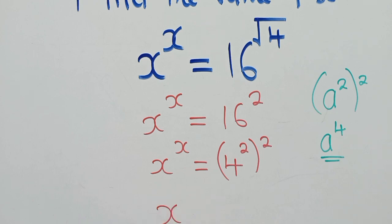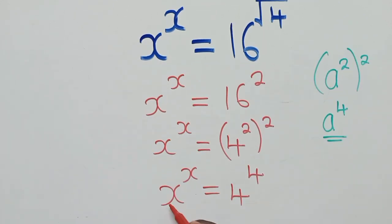We shall have x power x equal to 4 power 4. So if you can see here, this and this are equal to each other, this and this are equal to each other.